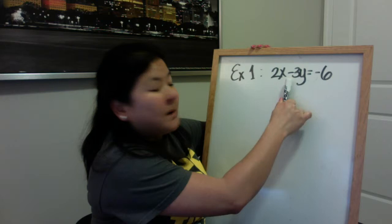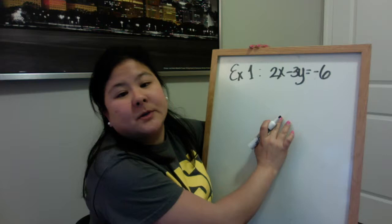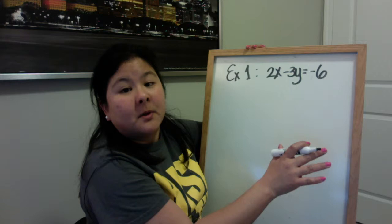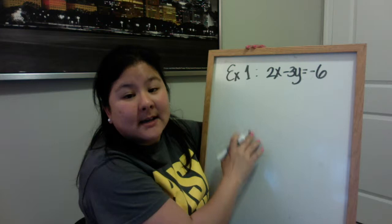This is example number one on your sheet. This example has 2x minus 3y equals negative 6. This example is not in slope intercept form. In fact, the goal today is not for you guys to work in slope intercept form until the very end of the problem. The goal for today is to find those x-intercepts and the y-intercepts.